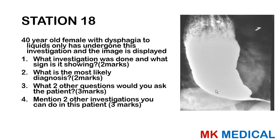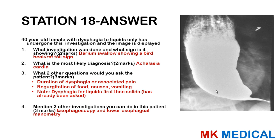Station 18: A 40-year-old female with dysphagia to liquids only underwent a barium swallow, showing the bird-beak appearance or rat-tail sign — consistent with achalasia cardia. Two additional questions: duration of dysphagia or associated odynophagia, and regurgitation of food or nausea and vomiting. Two further investigations are oesophagoscopy and lower oesophageal manometry to determine the pressures at the lower oesophageal sphincter.